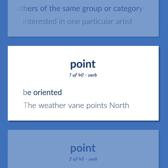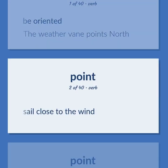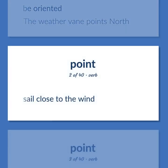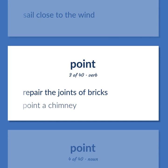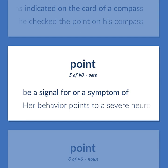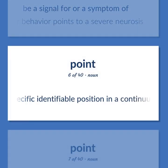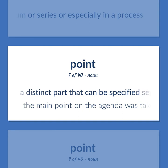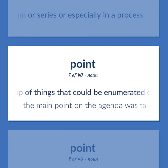Point: Be oriented — the weather vane points north. Sail close to the wind. Repair the joints of bricks — point a chimney. Any of 32 horizontal directions indicated on the card of a compass — he checked the point on his compass. Be a signal for or a symptom of — her behavior points to a severe neurosis. A specific identifiable position in a continuum or series. A distinct part that can be specified separately in a group — the main point on the agenda was taken up first.